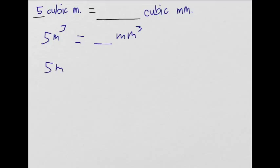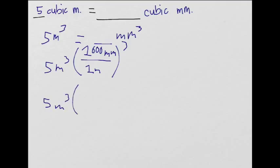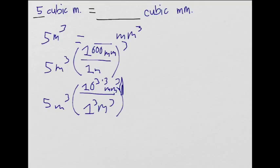Five meters cubed times — let's put one meter down here, a thousand millimeters up here — and let's cube that. Five millimeters cubed, one cubed is still one meter cubed, we're bringing the three inside. A thousand is ten cubed, so that's ten to the third times three millimeters cubed. I hope everyone is still with me. So these two cancel out, and we are left with five times ten to the ninth power millimeters cubed.